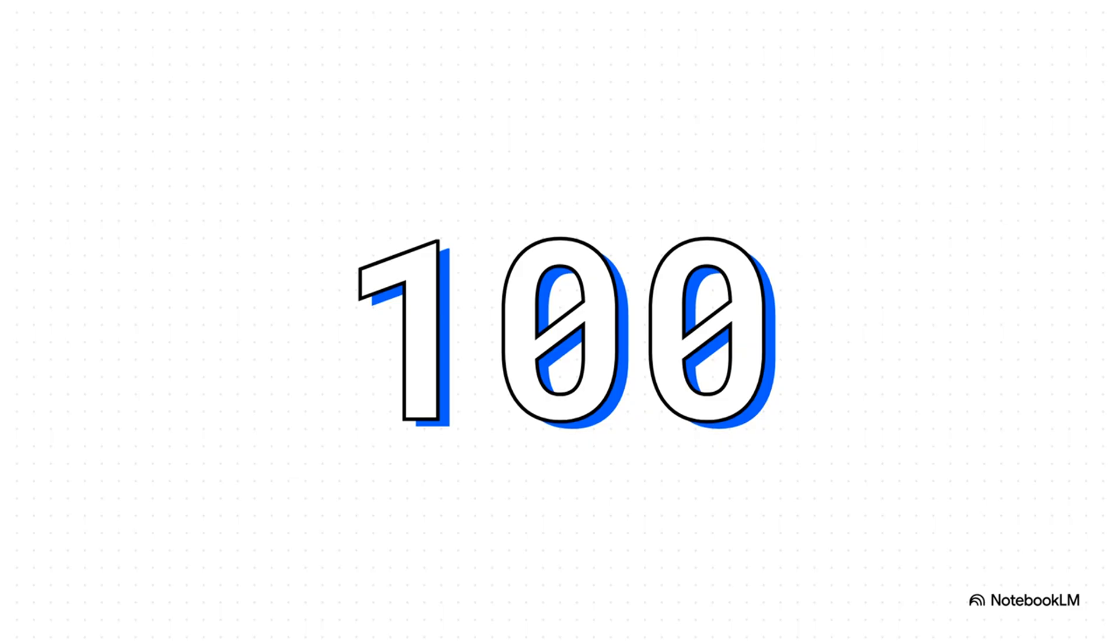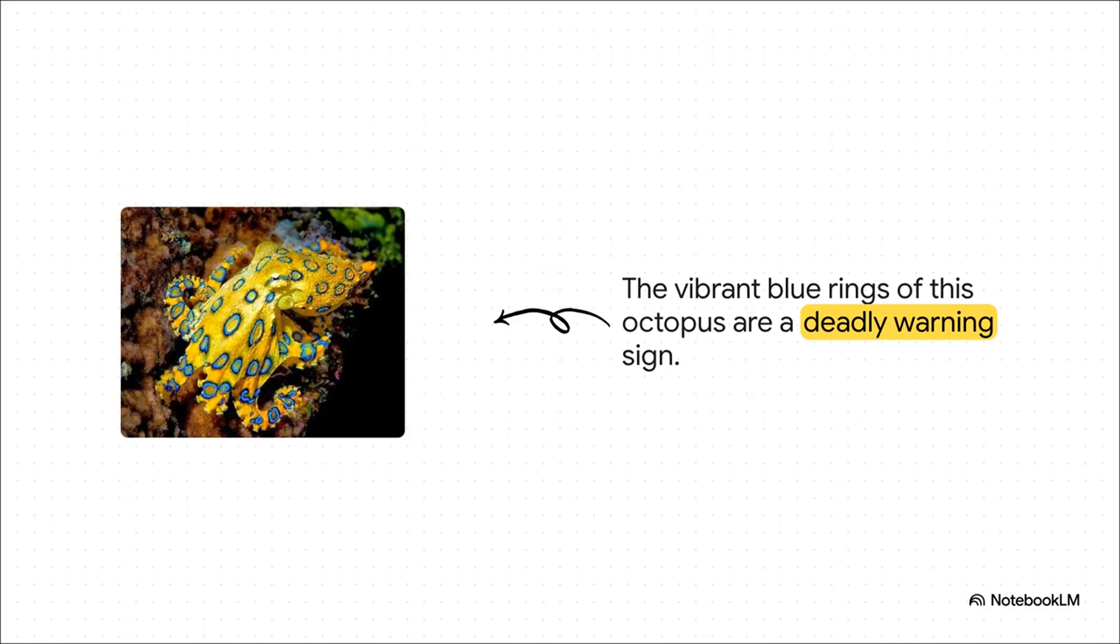100. That's the estimated number of adult humans that a single bite could kill. Now, to be clear, the snake isn't evil. It would much rather get away from you than fight. But that incredible power just shows how evolution, left to its own devices, created one of the most effective survival tools on the planet.